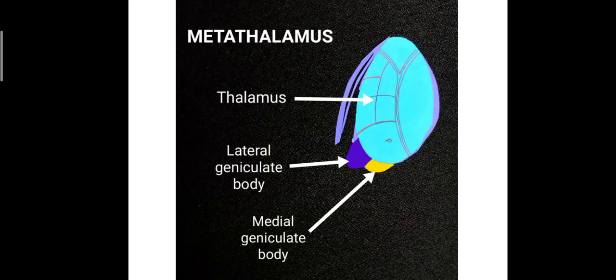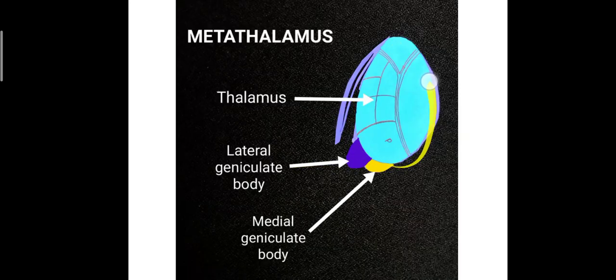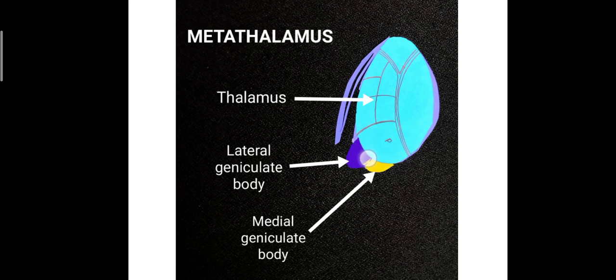Here we have a diagrammatic representation where you can see the thalamus and the pulvinar part of the thalamus. On the inferior aspect of the pulvinar you can see two rounded elevations — they are nothing but the lateral geniculate body and the medial geniculate body.